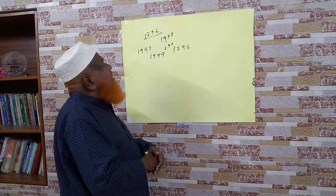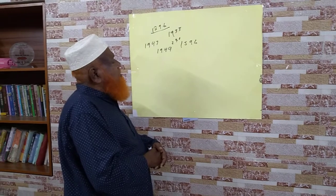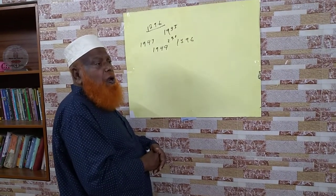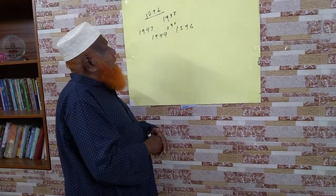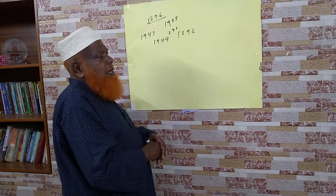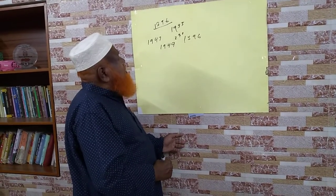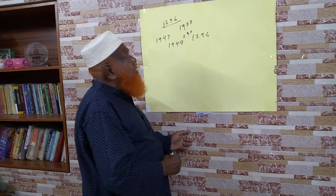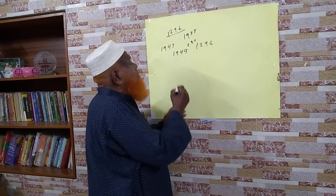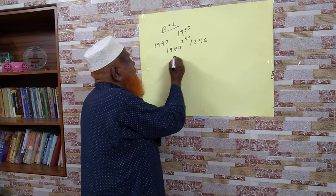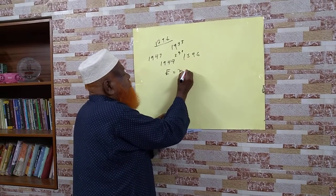Nuclear reaction is not like chemical reaction. Chemical reaction always conserves energy, like the energy of metals. In nuclear reaction, it is not so. In nuclear reaction, some mass is converted into energy, and the amount of energy is found by Einstein's famous law: E is equal to mc squared.